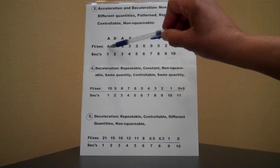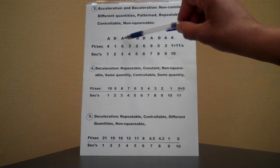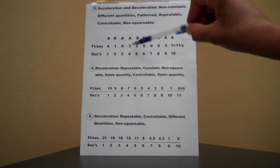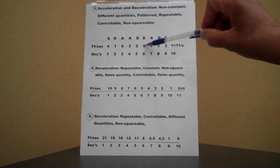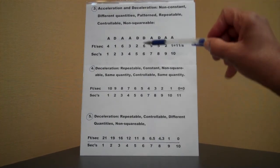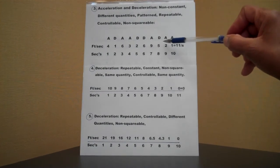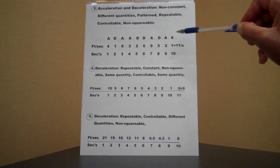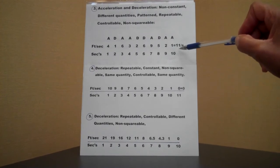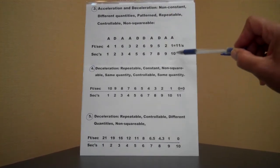You accelerated four feet. You decelerated one foot. You accelerated six feet. You accelerated three feet more in the next second. You decelerated two feet. You decelerated six feet here. Then, you accelerated nine feet. You decelerated five feet, and you accelerated two feet. Then, you accelerated one foot. At the end, you should be going somewhere around eleven feet per second, in those ten seconds.